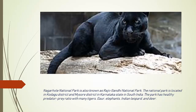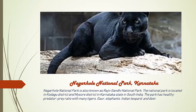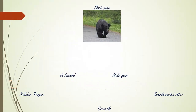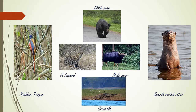Nagarhole National Park is also known as Rajiv Gandhi National Park. This national park is located in Kodagu district and Mysore district in Karnataka state. The park has a healthy predator-prey ratio with many tigers, gaur, elephants, Indian leopard, and deer. Animals found here include sloth bear, leopard, male gaur, crocodile, smooth-coated otter, and Malabar dragon.